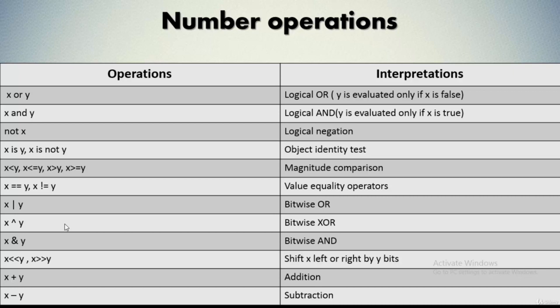We have various operations which we can perform over number types in Python. The first being x or y — the logical OR operation. When you apply the OR operation over two number data types x and y, y is evaluated only if x is false. The answer will be false only when both x and y are false; if any one of them is true, the answer evaluates to true.